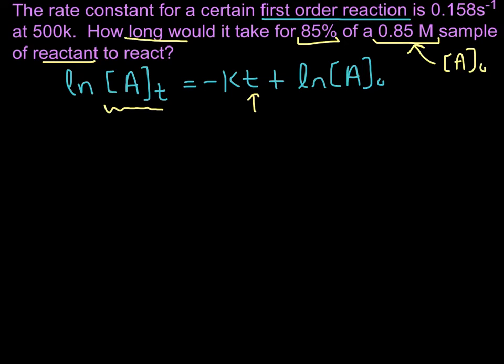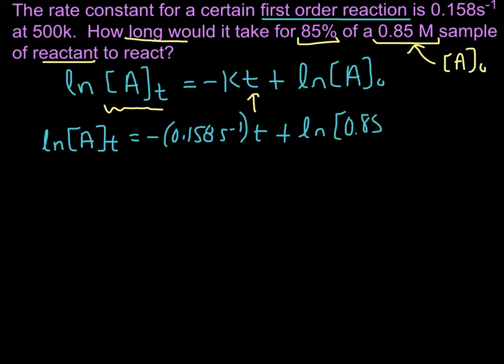Let's fill in what we have so far. We have the natural log of the concentration of A at some time t that we still need to fill in. Let's plug in our rate constant, 0.158 seconds inverse times time. And then we add the natural log of 0.85 molar, because that is our initial concentration.